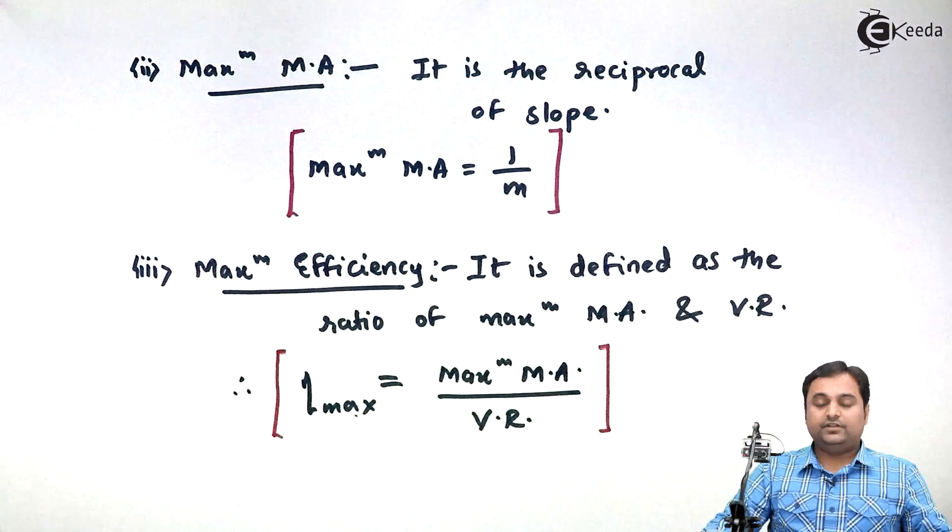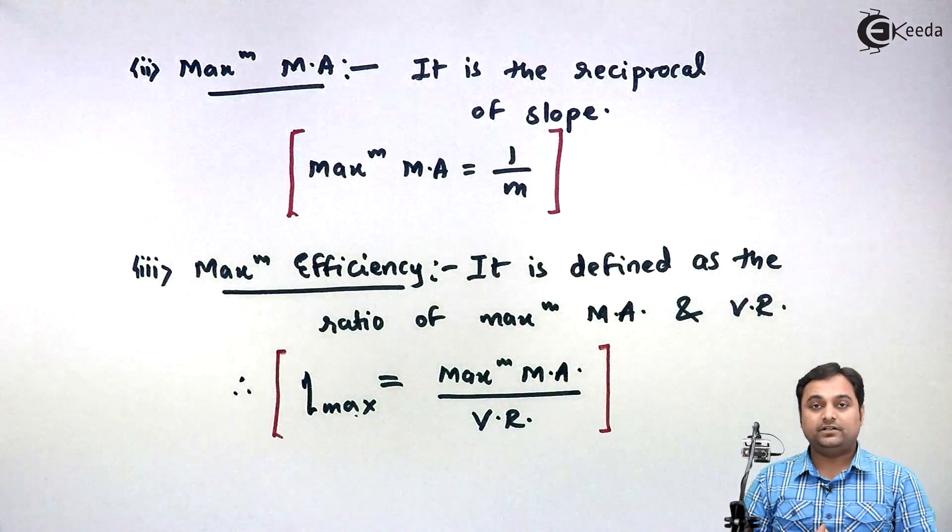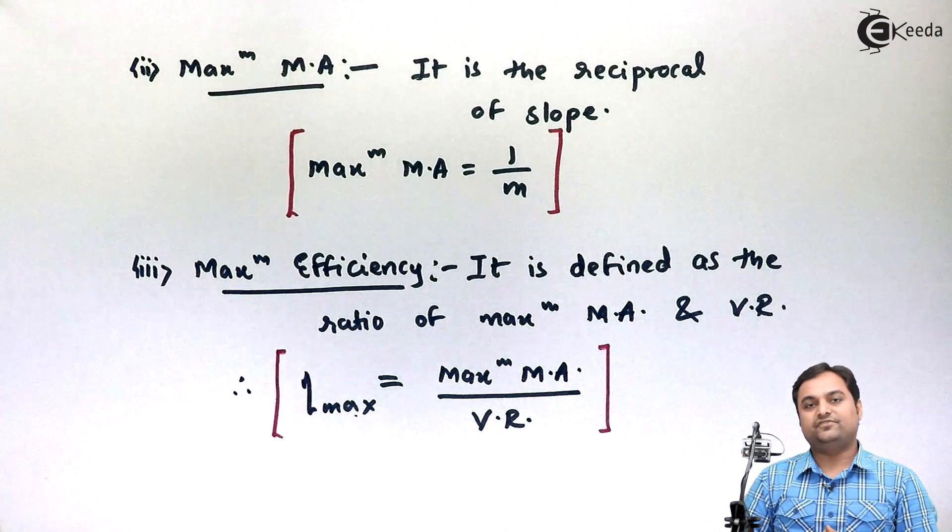So here in this video we have seen the definitions of law of machine with the explanation part, maximum mechanical advantage, and maximum efficiency.